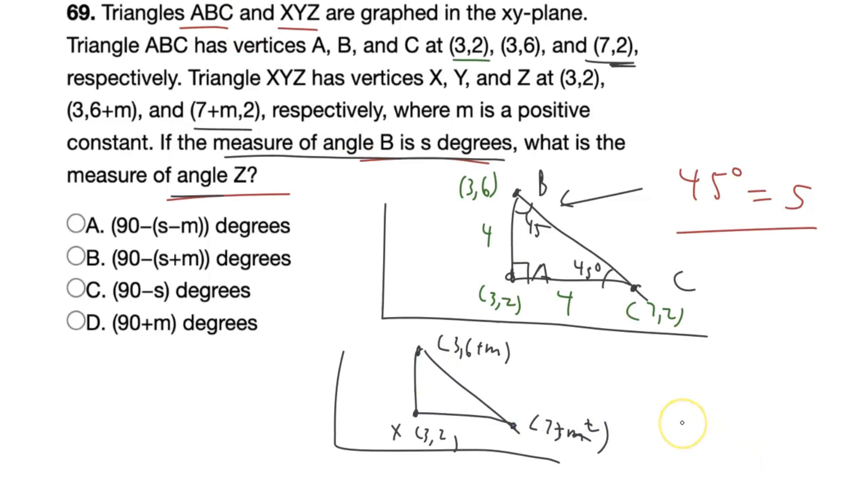Triangle XYZ looks like the same coordinates except there's a variable. So we have (3,2). Then we're going to have 3 and then 6 plus m. So we don't actually know where the y value is. Then we have the last coordinate is (7+m,2). And so we make another right triangle. We don't actually know the length of it because we don't know the value of m. But what we can do is find a relationship because m is existent in both of these side lengths. So if we were to find the side length of this right here, it would be 4 + m. We get the exact same thing for this side length, which is also 4 + m.